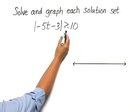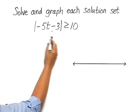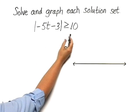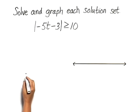Now we have a symbol greater than or equal to. When we have an absolute value greater than or equal to a number, this can be written as two separate inequalities joined by the word or. In other words, a disjunction.